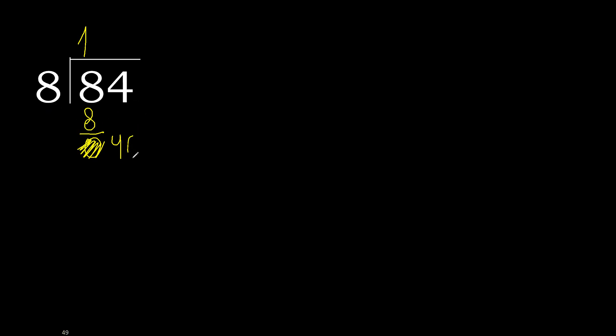There is no more number, therefore complete. Always complete with 0. Here, 0 point — 0 point because here there are 2 numbers.